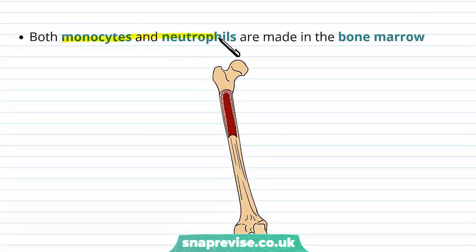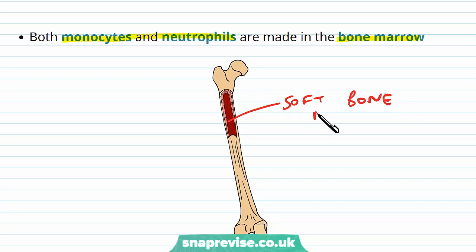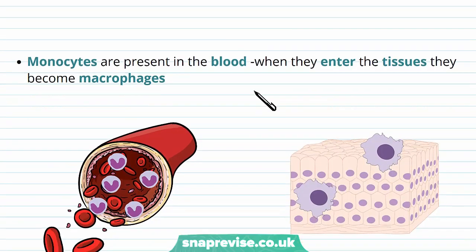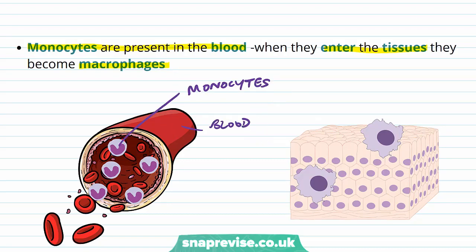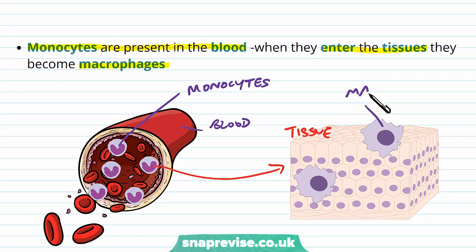Monocytes and neutrophils are both made in the bone marrow, which is the soft tissue found inside long bones like the leg bones or arm bones — it's where we make red and white blood cells before they enter the circulation. The monocytes circulate in the blood and eventually enter the tissues which need their help, and this is where they become macrophages. So monocytes circulate in their monocyte form and if a pathogen turns up at a particular tissue, they get recruited into the tissue, undergo a few changes, and can then be named as macrophages.